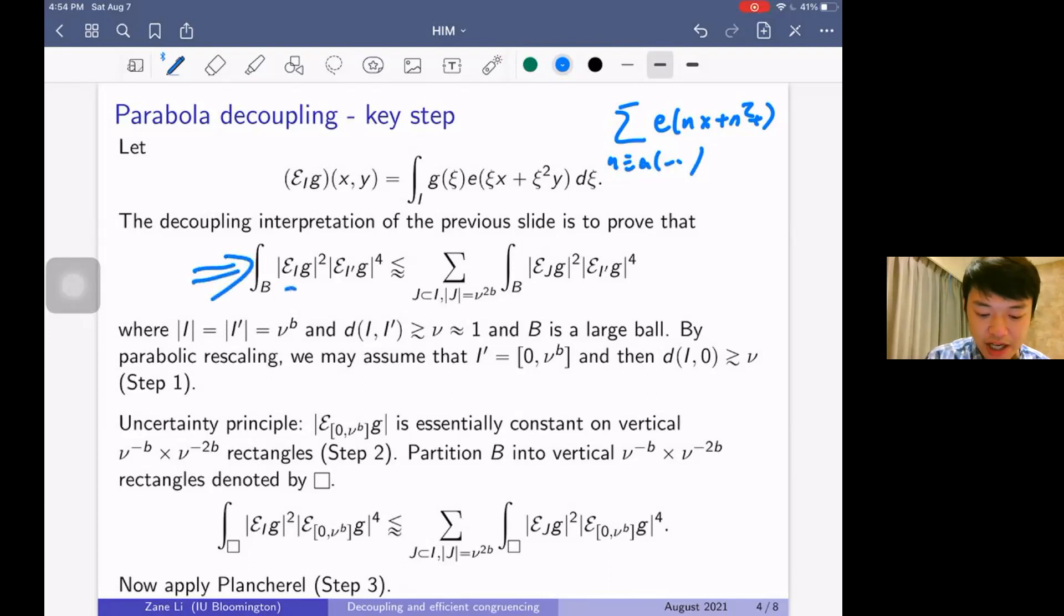We have an extension operator over I squared times extension operator over I' to the four, and the right-hand side basically decouples the interval I into smaller intervals while keeping the four copies of the extension operator over I' the same on both sides. Here I and I' are intervals of length ν^b. The distance between I and I' is at least ν, and you should think of ν as a parameter about of size one. This corresponds to working with two residue classes ζ mod p^b, η mod p^b, where ζ and η are not congruent to each other mod p.